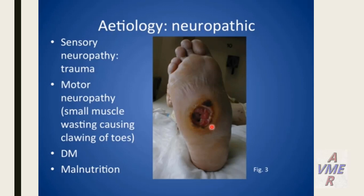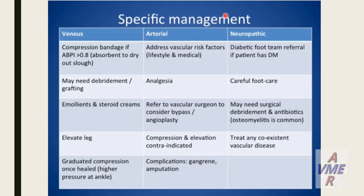How can we manage neuropathic ulcer? First, we have to control diabetes and do careful foot care, and assess soft tissue infection, and even bone infection in case of osteomyelitis, and correct all these conditions. We also have to remove the hyperkeratotic agent, callosity, and perform offloading. The key rule for management of neuropathic ulcer is controlled diabetes and offloading.